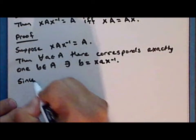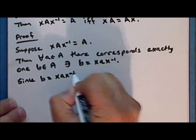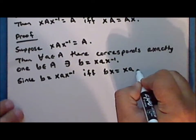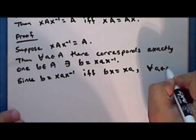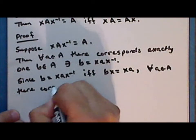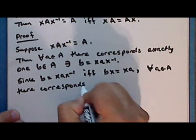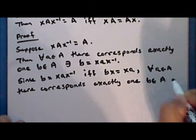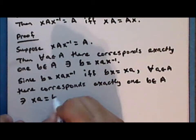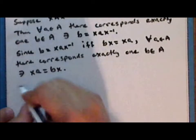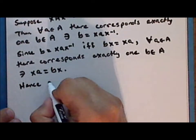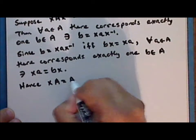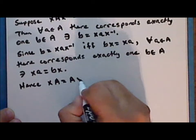Since b equals X times a times X inverse if and only if b times X equals X times a, we have that for every element a in A there corresponds exactly one element b in A such that X times a equals b times X. Hence the set obtained by multiplying each element in A on the left by X is the same as the set obtained by multiplying each element in A on the right by X.